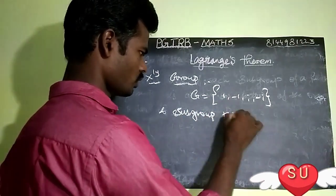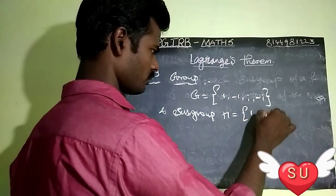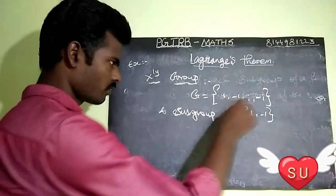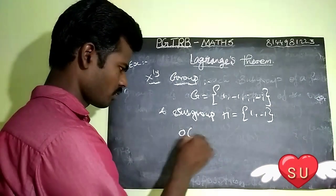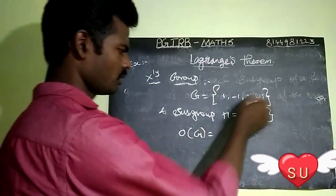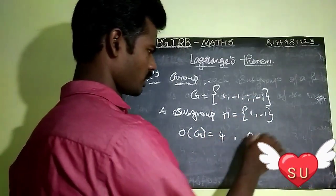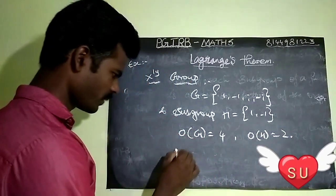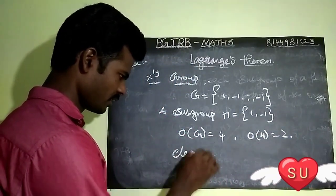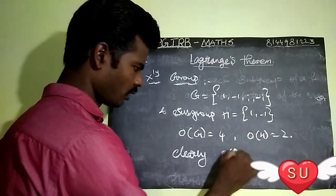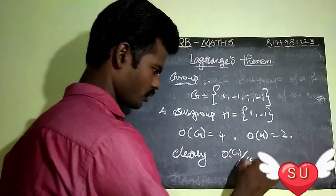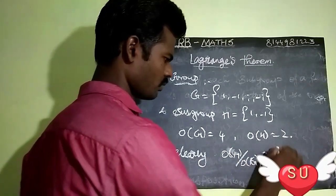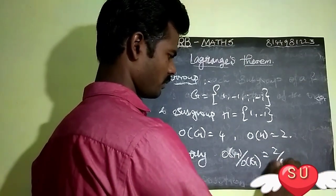For example, subgroup H equals {1, -1}. The order of G is 4, and the order of H is 2. So we can clearly verify: order of H divided by order of G — that is, 2 divided by 4. So 2 divides 4.